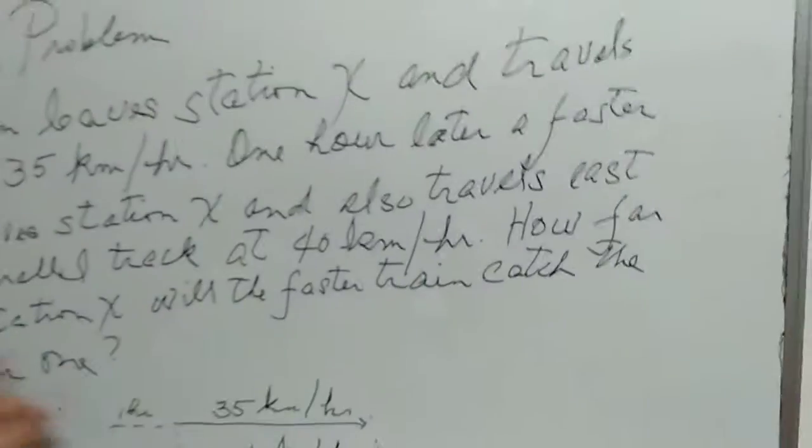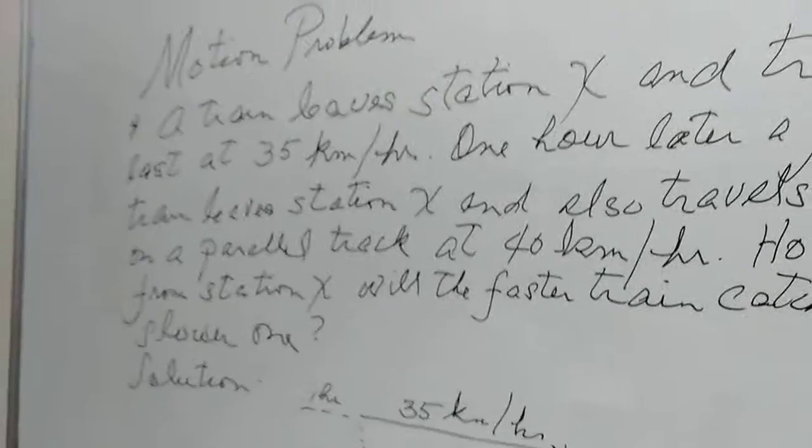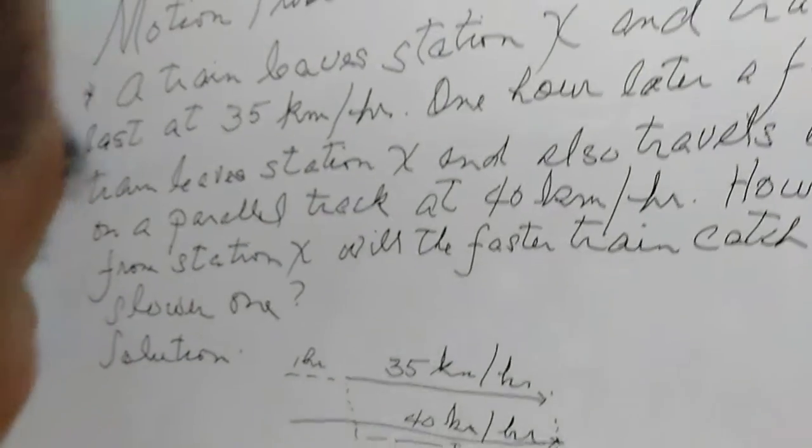How far from station X will the faster train catch the slower one? So we have a simple diagram here, and as you can see, the slower train starts at station X and travels east.